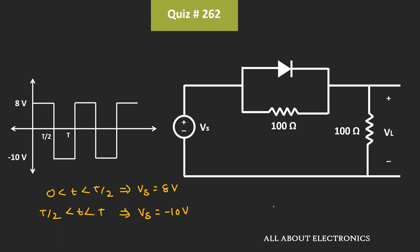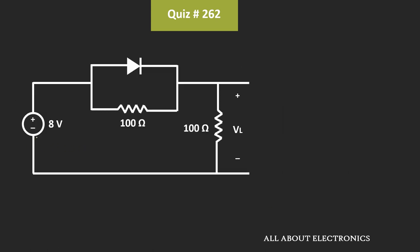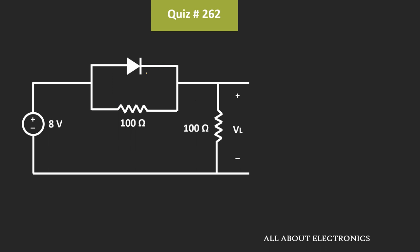So let's find out the output voltage during the positive as well as the negative half cycle. During the positive half cycle, this voltage Vs is equal to 8V. Let's see whether this diode is conducting or not. For that, let's find out the open circuit voltage across the diode. When this diode is not connected in the circuit, the output voltage across each resistor will be equal to 4V, because both resistors are the same. That means the voltage across the anode and the cathode of the diode will be equal to 4V. And as this voltage is greater than 0, this diode will conduct — it will act as a short circuit. Because of that, this 100 ohm resistor will also get short circuited. That means during the positive half cycle, this output voltage Vl is equal to 8V.